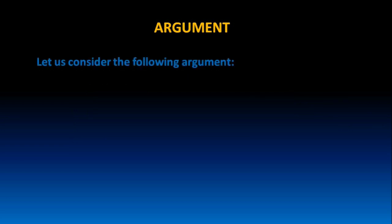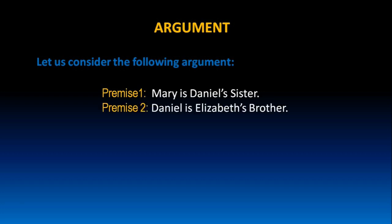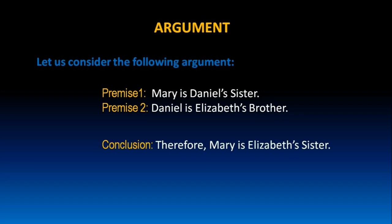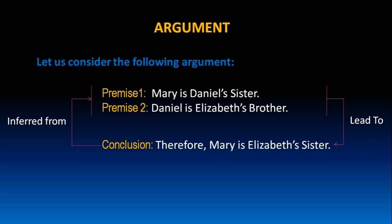Let us consider one more argument. Mary is Daniel's sister. Daniel is Elizabeth's brother. Therefore, Mary is Elizabeth's sister. In this argument also, premise one and premise two lead to the conclusion that Mary is Elizabeth's sister. The conclusion is inferred from the given two premises. Hence, the conclusion is dependent on the given two premises.